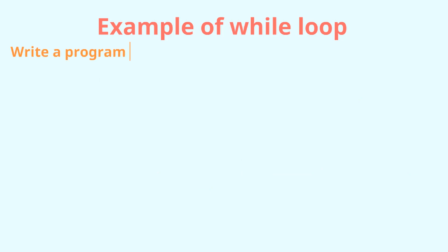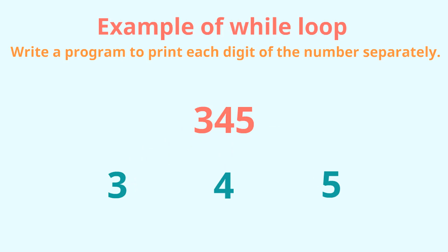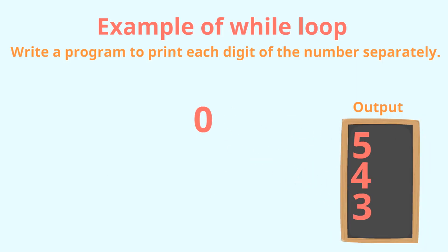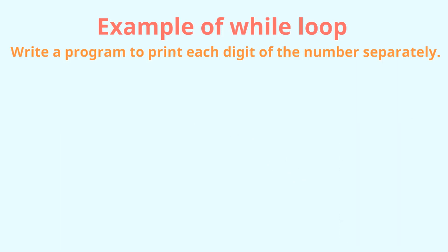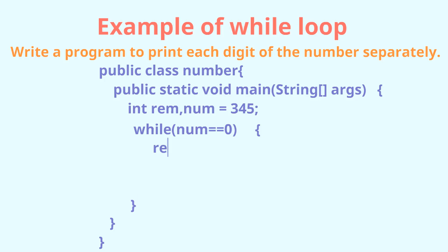Let's look at another example: a program where you print each digit of a number separately. Let's understand the logic of how to break a number down into individual digits, as this concept is used in multiple programs. We will separate each digit from the right and print it until the number becomes zero. In initialization, we set our number to some value, which can also be taken from the user. In the while loop, we put the condition to execute until the number equals zero. Within the loop, the way to get an individual digit is to get the remainder after dividing by ten — this gives the rightmost digit, which we then print.